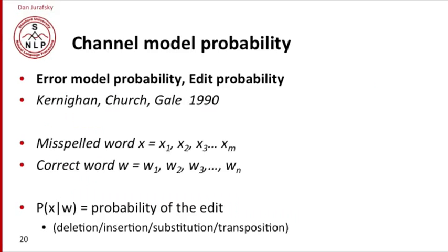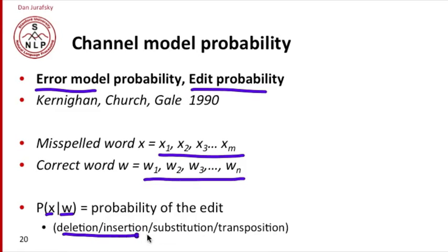How about computing the channel model probability? Remember the channel model is also called the error model or the edit probability. We're going to take a simplifying assumption made by Kernighan, Church, and Gale in 1990 when they first proposed the use of the noisy channel model. Let's assume the misspelled word x has a set of letters x1 through xm, and the correct word w has a set of letters w1 through n. The probability of the edit x given w is going to be some set of deletions, insertions, substitutions, or transpositions.